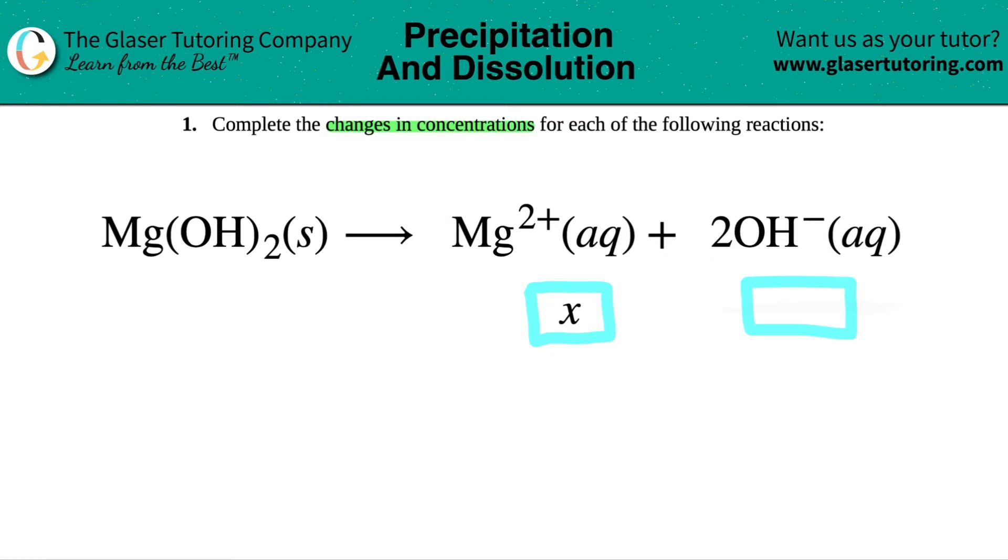Now the question is, what is the change in hydroxide when the magnesium concentration is changed by an x value?